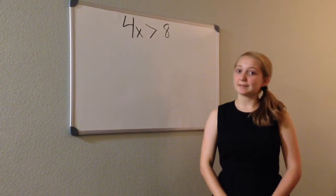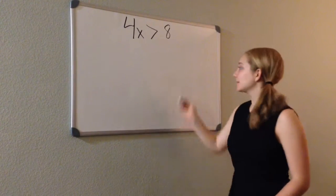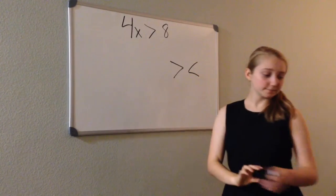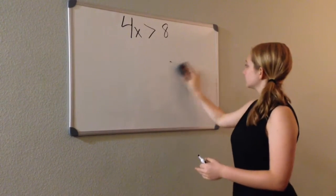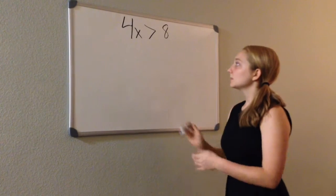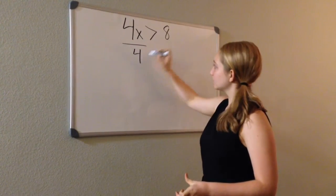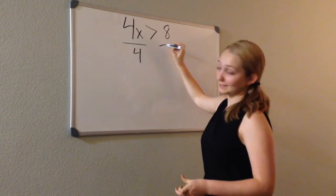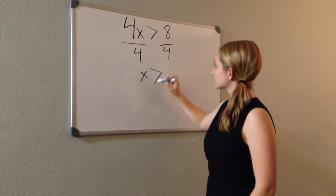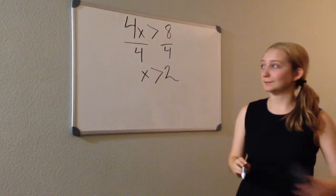Now let's move on to solving inequalities. An inequality is like an equation, but it uses the greater than or less than symbols. Other than that, it's pretty much the same. To start off, let's divide by 4 to isolate X. X is greater than 2.